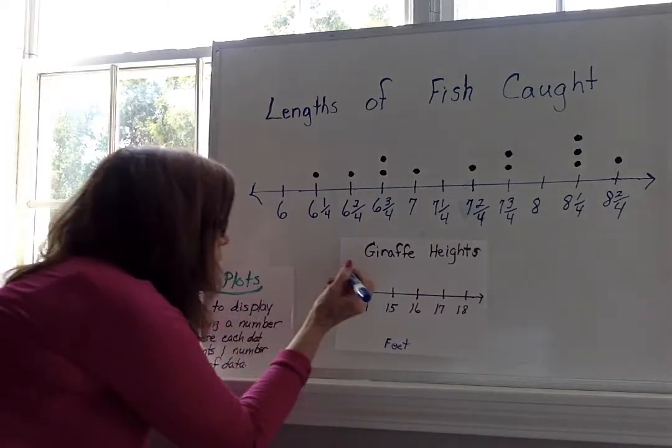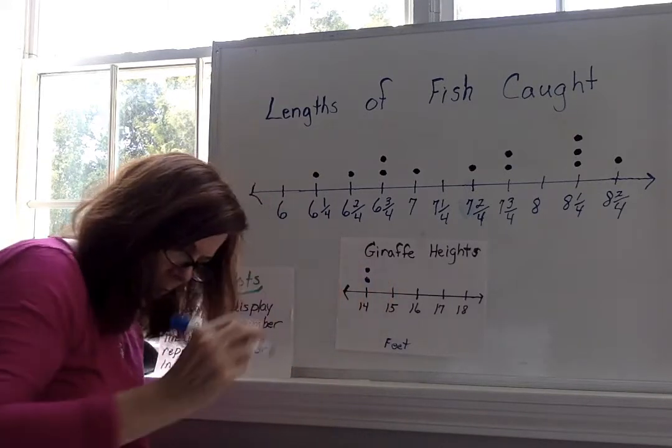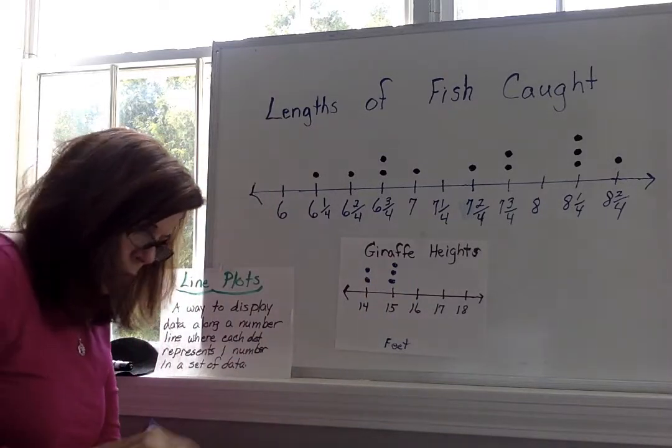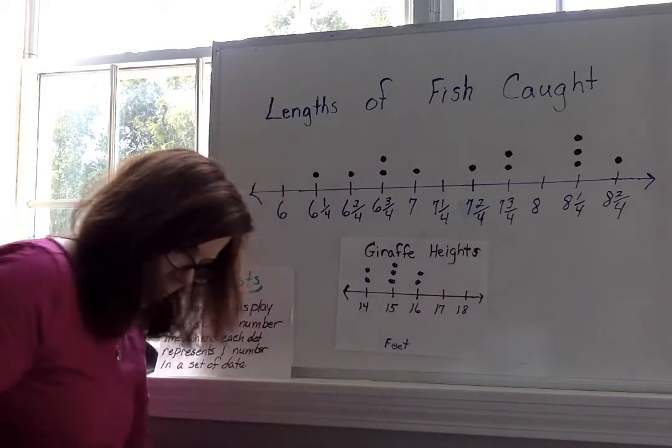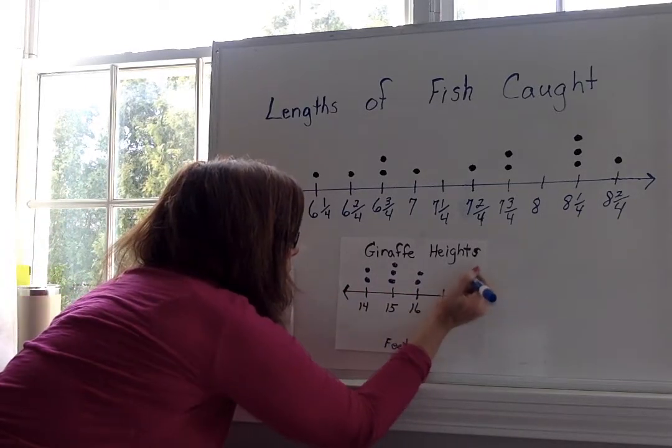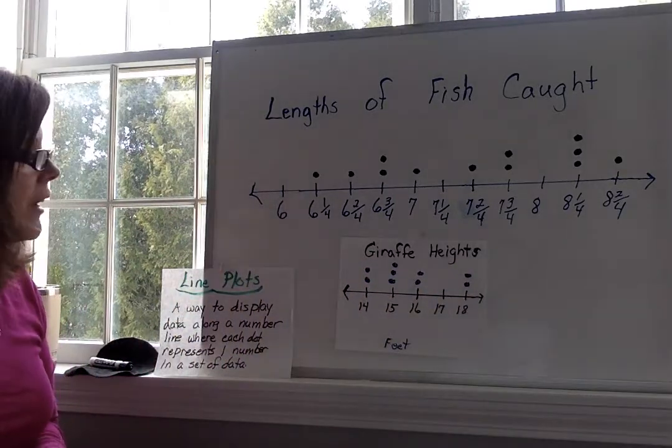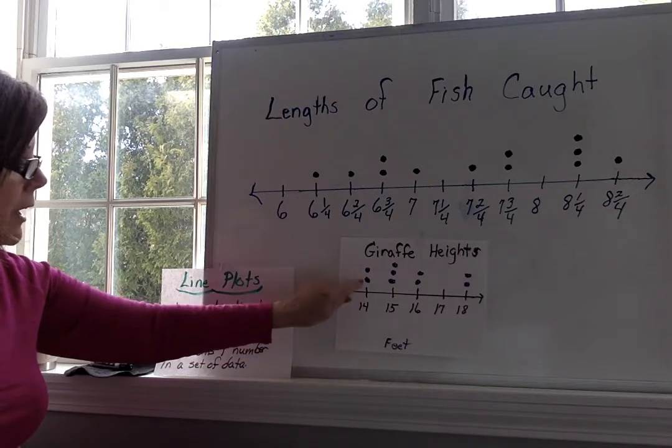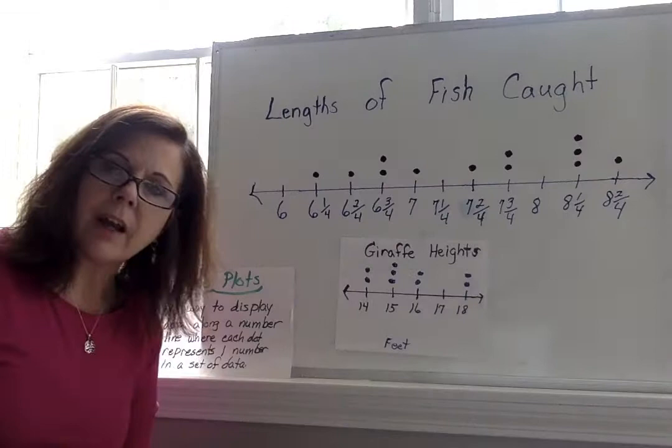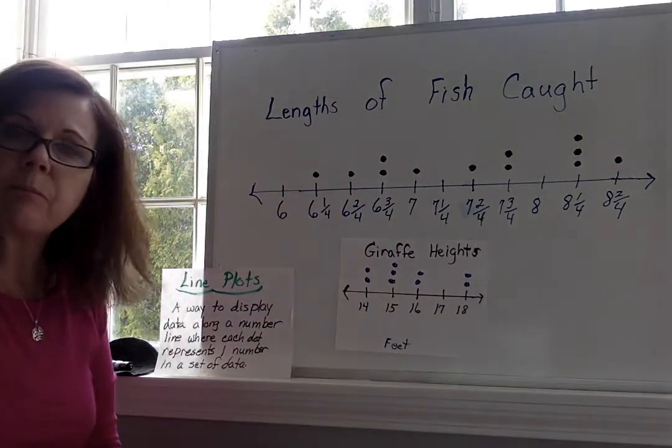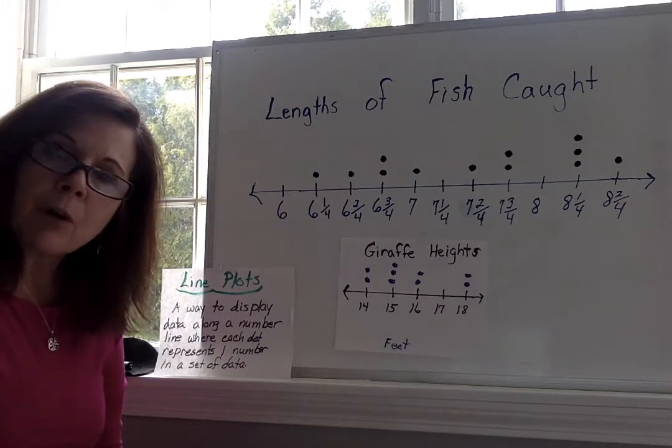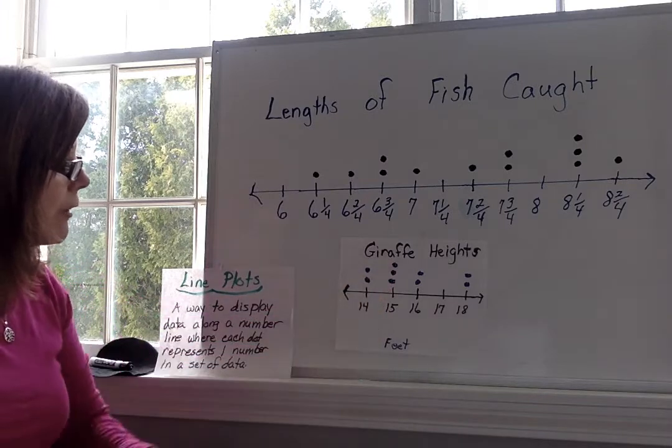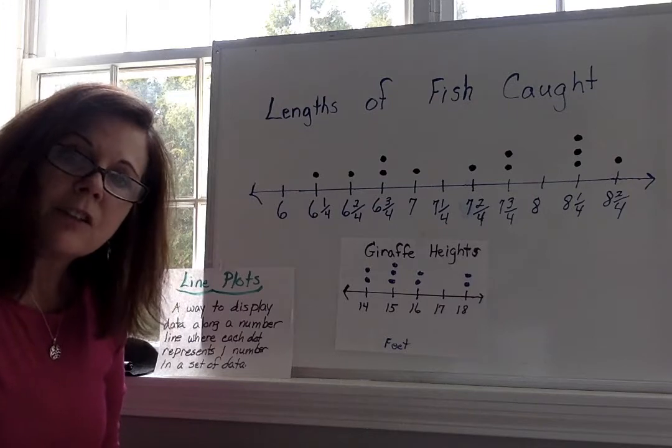So, we have two giraffes that are 14 feet tall. So, here are my two dots. And we have three giraffes that are 15 feet tall. And we have two giraffes that are 16. There are a lot of giraffes. 16 feet. And then there are two giraffes that are 18 feet. Okay. So, if I asked you, how many giraffes are 14 feet tall? Well, here's the 14 mark, 14 feet. And as you can see, we have two giraffes. What is the most common height of the giraffes? The most common height. What would you think that would be? So, it would have to be the number with the most dots. That would be the most common. So, that would have to be 15 because there are three giraffes that are 15 feet.